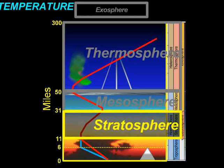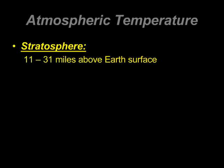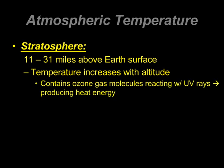Just below the mesosphere is the stratosphere, where temperature, much like the thermosphere, goes up as we increase in altitude. About 11 to 31 miles above Earth's surface is where we find the stratosphere. Why does temperature increase with altitude? In the top of the stratosphere, you find a higher concentration of ozone gas molecules. The X-rays and gamma rays have been filtered out at higher levels, so now we have infrared, visible light, and UV rays. In the stratosphere, UV rays start to react with ozone gas molecules at the top level, producing heat energy as a byproduct.